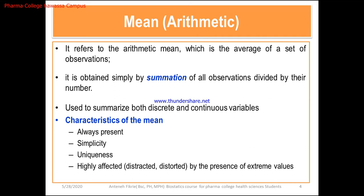The mean helps us summarize both discrete and continuous variables. If you remember from the beginning class, quantitative variables can be classified into two: quantitative and continuous. Mean has value for discrete as well as continuous variables, but it does not have meaning for qualitative variables. For example, is it possible to calculate the mean of a name or sex? Sex is a qualitative variable, so it is not possible to calculate the mean of sex.